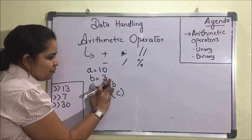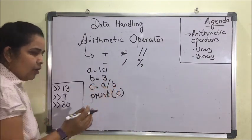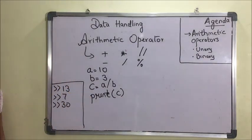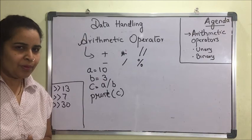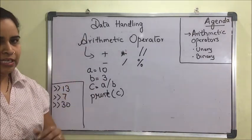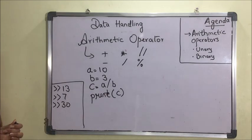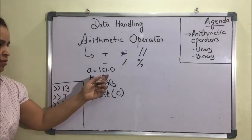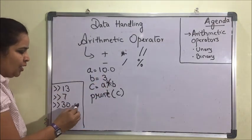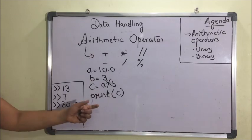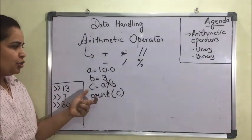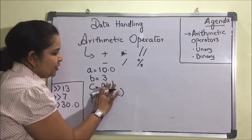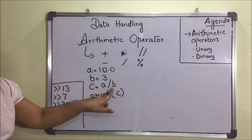When we use the division operator, in all three cases — addition, subtraction, and multiplication — if both operands are integers, the result will be an integer. If one operand is float and another is integer, implicit type casting will be done and the output will always be a float value.